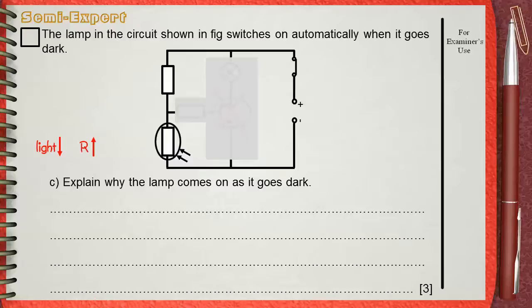When the resistance of the LDR increases, and remember it's in series with the other resistor, its share of the voltage will increase. When the voltage across the LDR increases, this will automatically increase the voltage across the base and the emitter of the transistor, VBE.